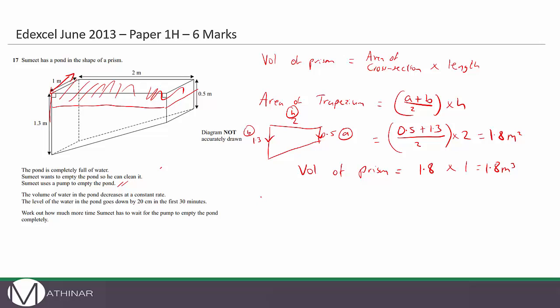Let's work out the dimensions and volume of the cuboid that's been removed. We've got 2 meters by 1 meter by 20 centimeters, which is 0.2 meters. So it's 2 × 1 × 0.2, which is 0.4 meters cubed. Since the rate is constant, the rate that the water decreases is 0.4 meters cubed per 30 minutes.